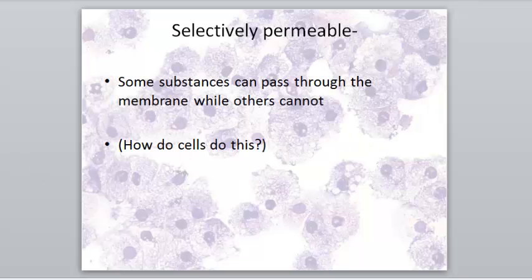Cells are selectively permeable — some things can pass through the membrane while others can't. This is called selective permeability. Selective means the cell chooses, or something is chosen. Permeable means porous, something that allows gases or liquids to pass through it. So how do cells select what to allow to pass through the membrane?